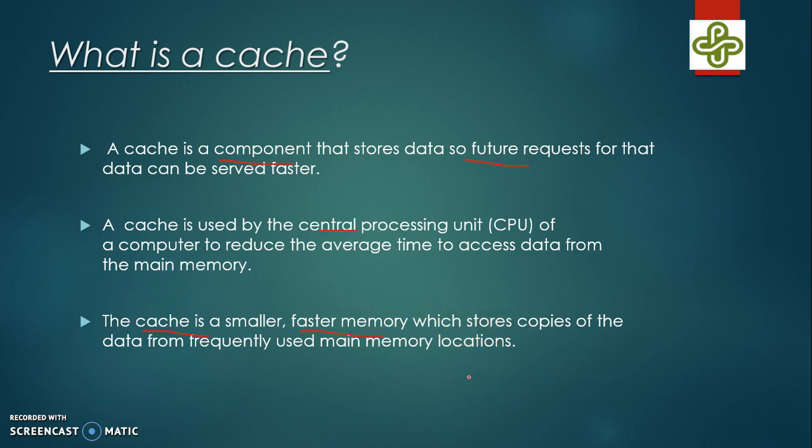A question might arise: how is cache memory faster than main memory? The reason is that cache memory is made up of SRAM and main memory is made up of DRAM. DRAM needs to be refreshed periodically to keep the data, so it takes some cycles. Also, caches are on the same die or nearer to the processor, so they are comparatively faster.